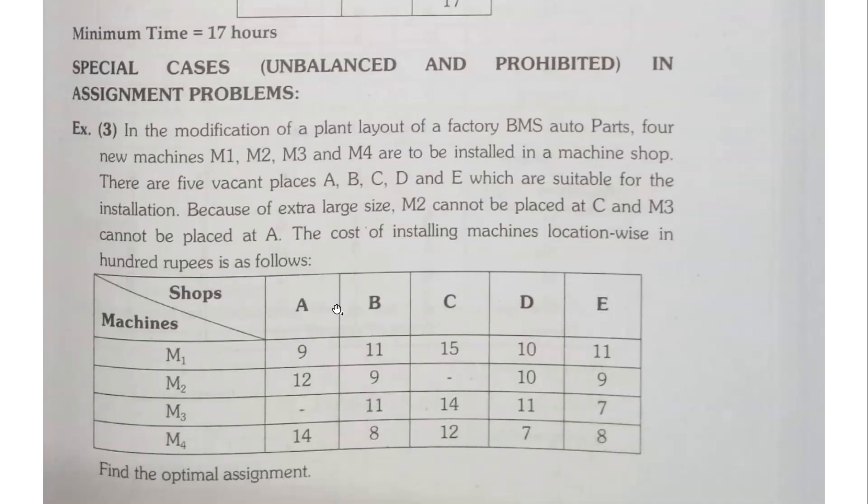So we have a restriction and then we will have a table. Machine, shops A, B, C, D, E and machines M1, M2, M3, M4. Now two things are: number one, this is unbalanced, this is not pure square, this is a rectangular problem.